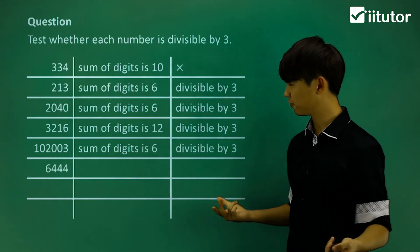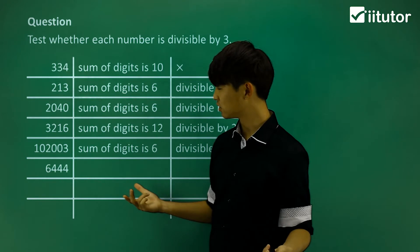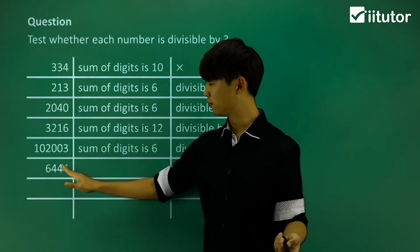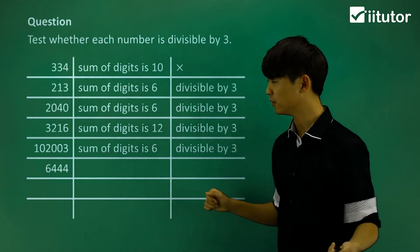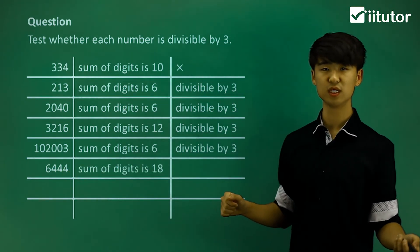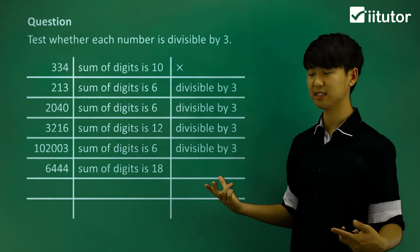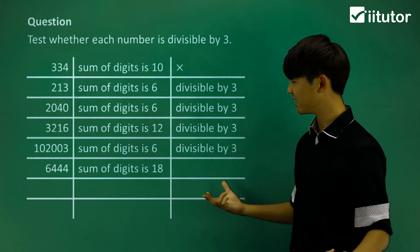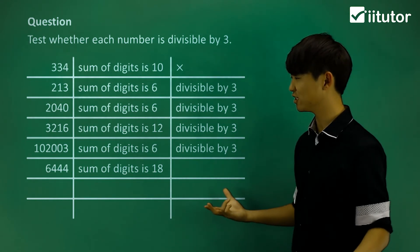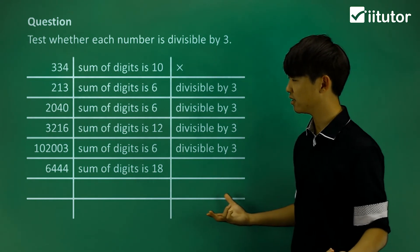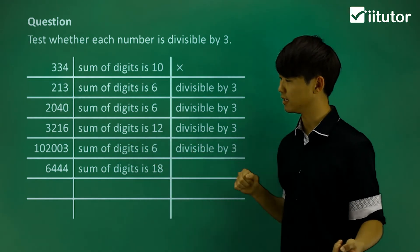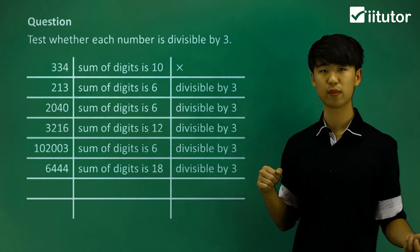Now 6,444: 6 plus 4 plus another 4 plus another 4. The sum of digits is 18. And again, 18 is also divisible by 3. So that number is divisible by 3.